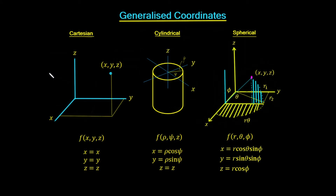In the last video, I mentioned that we were going to replace our coordinate system with a generalized coordinate system. So let's look at that in this video. I've got drawn out here three different coordinate systems: the Cartesian, cylindrical, and spherical.